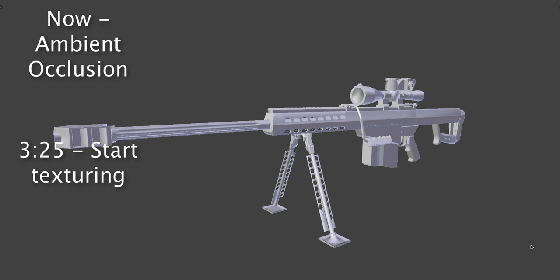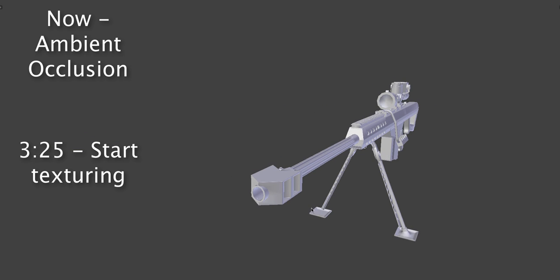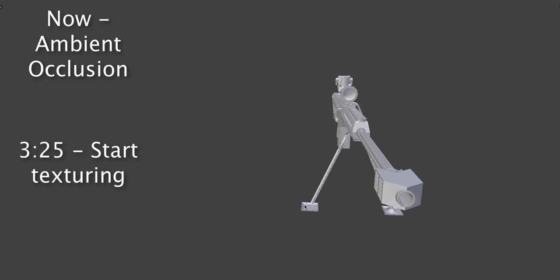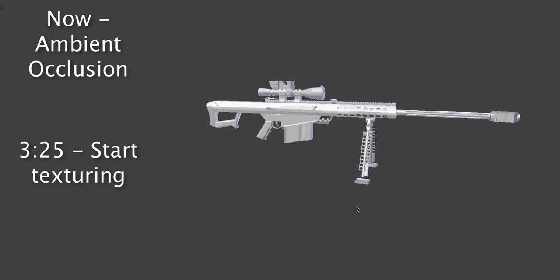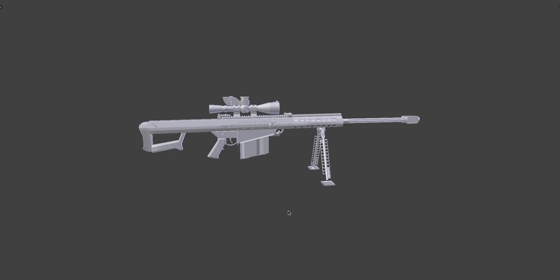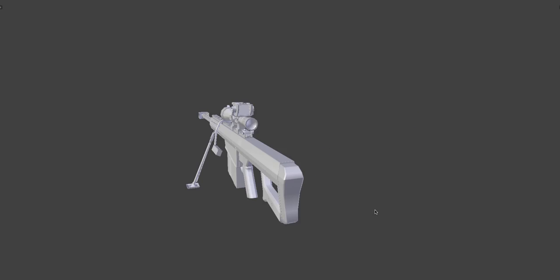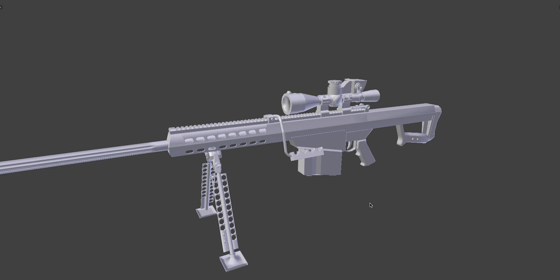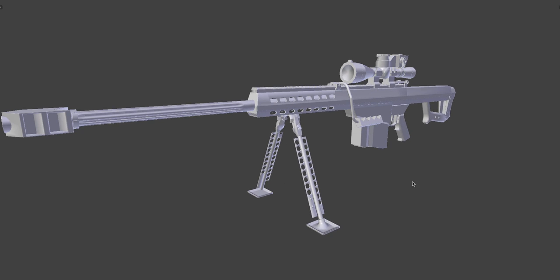In this video I'll be showing you how to texture a weapon. For my example I'll be using a Barrett I made, and I'll be using GIMP and Blender.